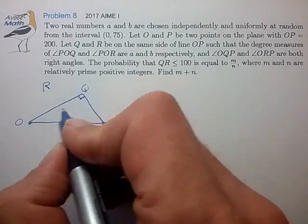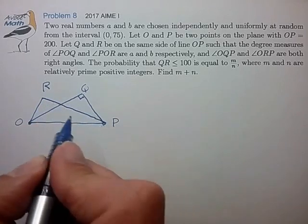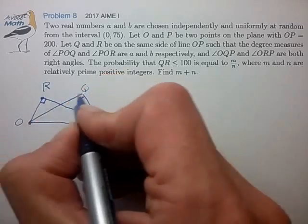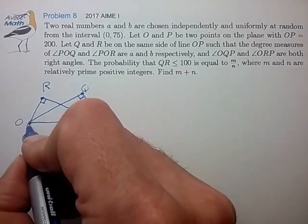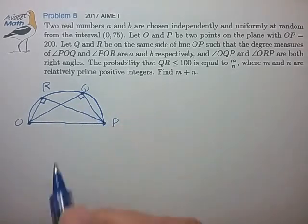So that's a right angle, and this is a right angle. And what that means is that the points R and Q have to lie on a semicircle, and that seems important.